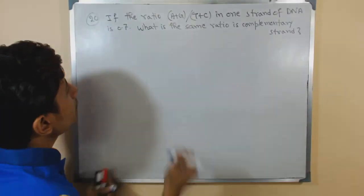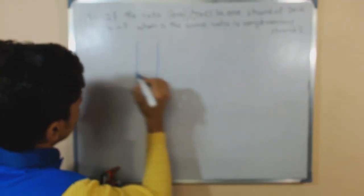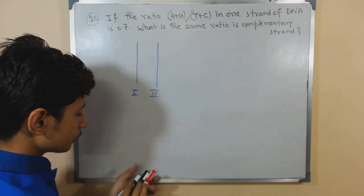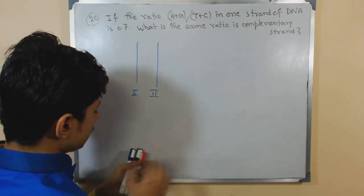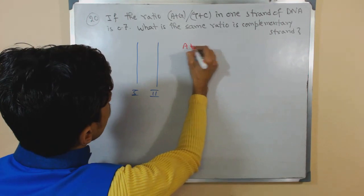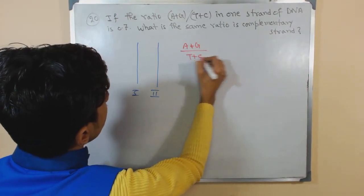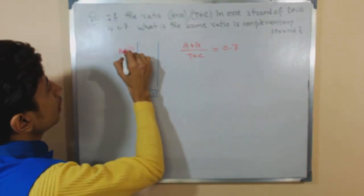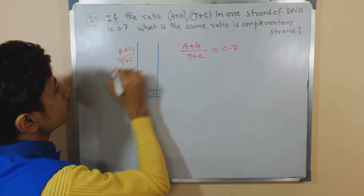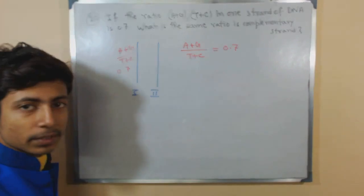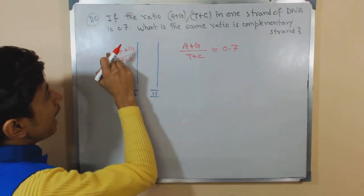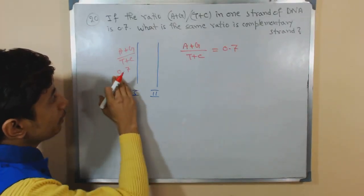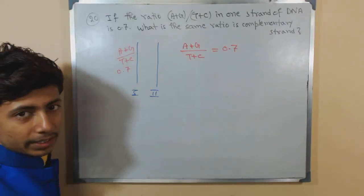Let me draw two different strands. In strand 1, the ratio of adenine plus guanine to thymine plus cytosine is 0.7. What will this same ratio be in the opposite strand? That is what they are asking.